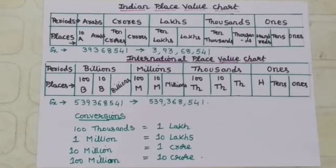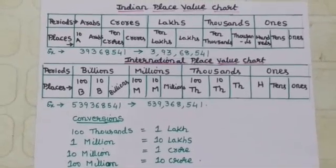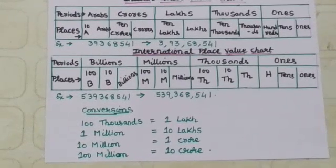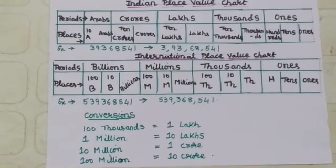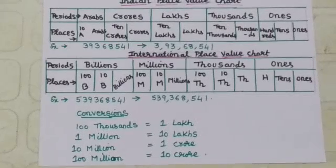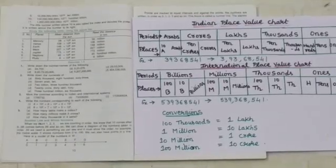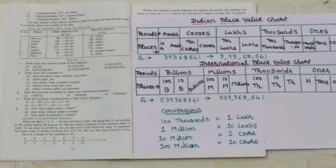Now, there are some conversions from international system to Indian system. We call them as 100,000 as 1 lakh, 1 million is 10 lakhs, 10 million is 1 crore, and 100 million is 10 crore. Based on this, we will solve Exercise 1.3.